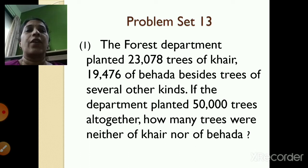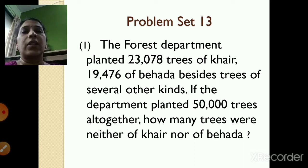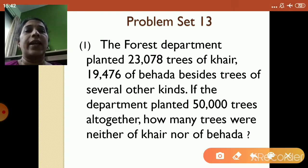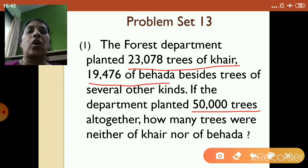The first question is: the forest department planted 23,078 trees of Kher and 19,476 of Behada, besides trees of several other kinds. If the department planted 50,000 trees altogether, how many trees were neither of Kher nor of Behada? So, what is given in the question? The forest department planted 23,078 trees of Kher and 19,476 of Behada, and altogether the forest department planted 50,000 trees.